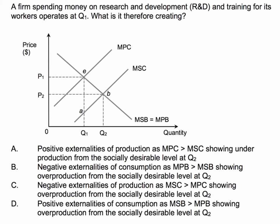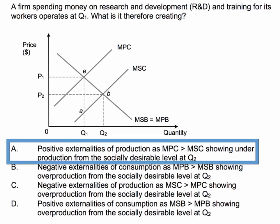When you're ready, I'll be with you and the right answer. So in this situation, the firm is spending money on R&D and training for its workers. What is it creating? It is creating externalities — but which type of externalities? It's creating positive externalities of production.